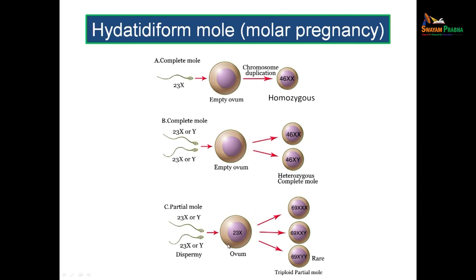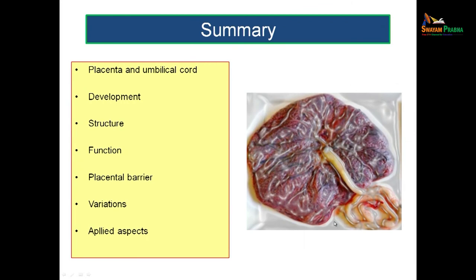To summarize, we have discussed the placenta, the umbilical cord, its formation, the development of chorionic villi and its different stages, the structure and functions, the placental barrier and how it becomes a term villus, variations of the placenta based on shape, umbilical cord attachment, and penetration, and applied aspects including placenta previa and hydatidiform mole. Thank you.